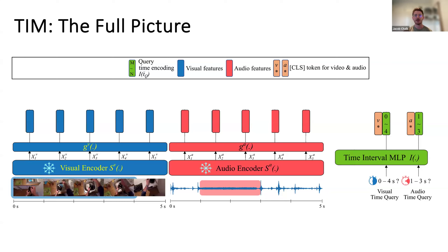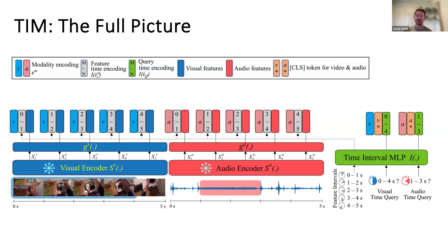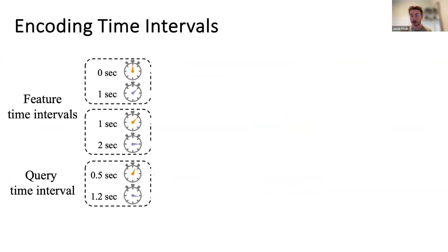The pre-extracted features also span a time interval themselves, so we feed those time intervals into the Time Interval MLP and concatenate them to the input features so the model knows what each feature represents in terms of time — giving a notion of relative position within the video. We also have a modality encoding to distinguish between visual and auditory tokens. This forms our input sequence to the audio-visual transformer encoder, which processes through all subsequent layers. The final CLS token output is passed through classifier heads and TIM outputs the class via softmax.